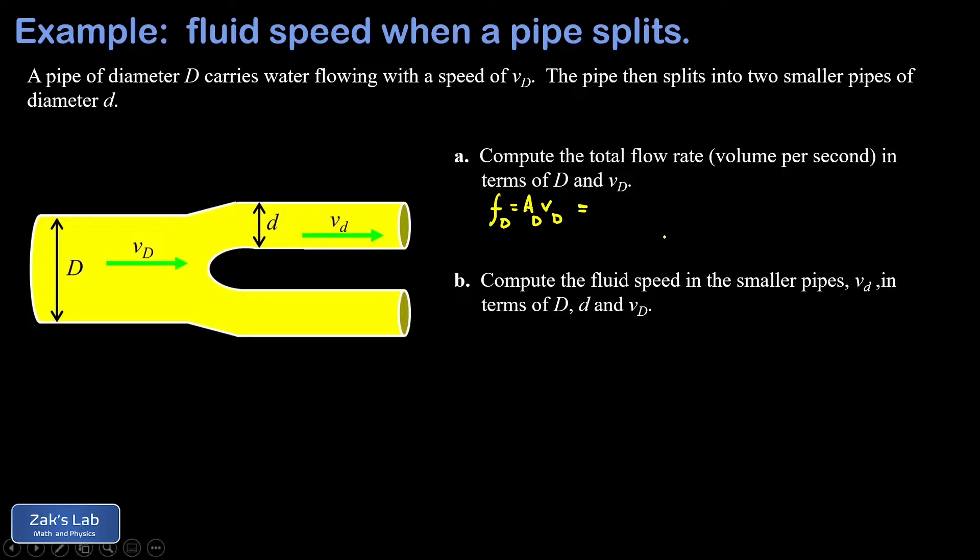I would prefer to handle this algebraically by just squaring the D over two and bringing the factor of one fourth out in front. So my cross-sectional area is one quarter π diameter squared, and then my fluid speed was v_D. And that's it, we have our flow rate expressed in terms of the diameter and the fluid speed of the fat part of this pipe.